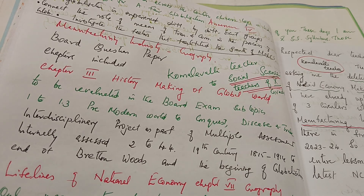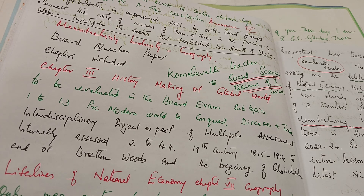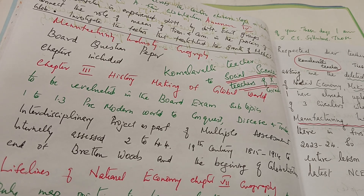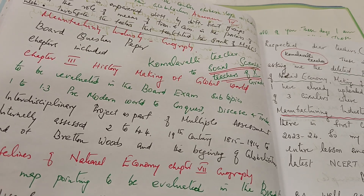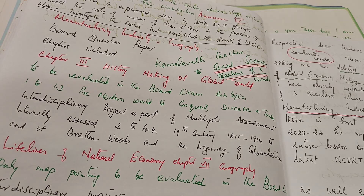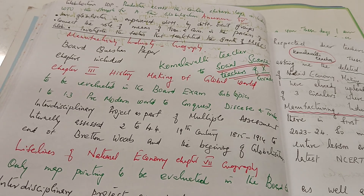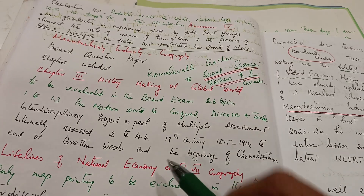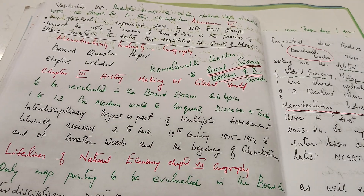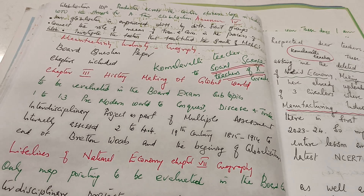Your next doubt is about Chapter 3 History — Making a Global World. In green color I have written what is for the board exam, and in black color it is meant for the interdisciplinary project. Making a Global World, to be evaluated in the board exam, covers subtopics 1 to 1.3 — Pre-modern World to Conquest, Disease and Trade. For the interdisciplinary project as part of multiple assessment, internally assessed, it covers sections 2 to 4.4, which is the 19th century (1850 to 1914) to the end of Bretton Woods and the beginning of globalization.